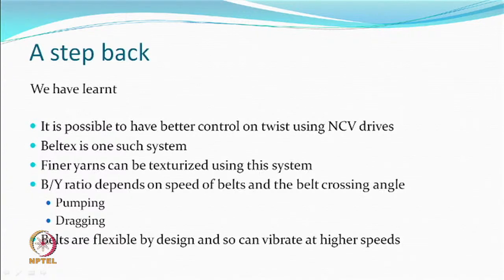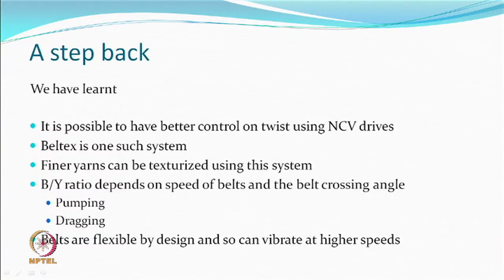Finer yarn means whose individual denier per filament may be sub-denier. The B-by-wire ratio as defined in the Beltex system depends on the speed of the belt and the belt crossing angle. If these two things are defined, then theoretically, if everything is as per the design, the B-by-wire ratio is automatically determined. Therefore, the quality parameters could in some sense be considered independent of the B-by-wire ratio.